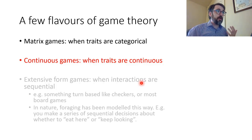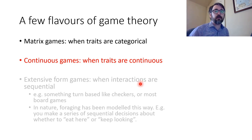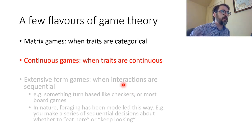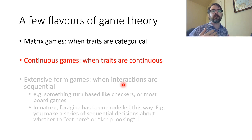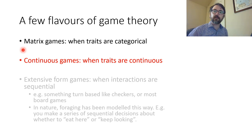This is the third and final video in my introduction to evolutionary game theory series. In the previous videos, I gave an introduction to the analogy between classical games and evolutionary games and some definitions. I also talked in quite a bit of detail about a few example matrix games and how to solve them, and that they're useful when traits are categorical.